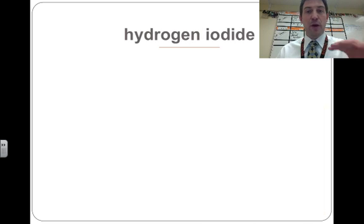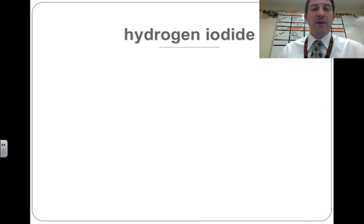Okay, switching gears. If we start naming these out or writing the formulas out from them, now I have hydrogen iodide. Hydrogen iodide, it does not say anything with mono. It doesn't say mono iodide or diiodide or trihydrogen, which means this is probably a good indicator of an ionically bonded molecule.